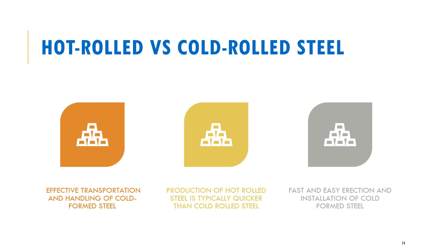Regarding the differences between hot rolled and cold formed steel: cold formed steel is more effective in terms of transportation and handling because it is lightweight, making it easier to transport and handle. The production of hot rolled steel is typically quicker because you're melting the steel and it's easier to shape and mold into desired sections, compared to cold formed where you have to mechanically exert forces to bend steel sheets into desired shapes.